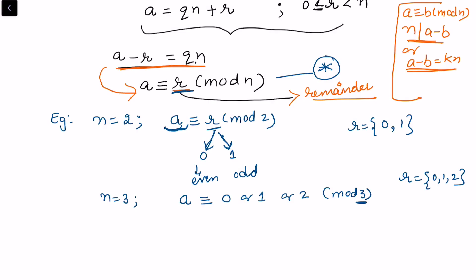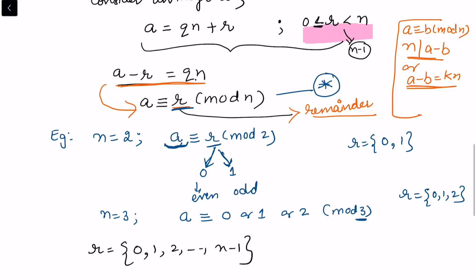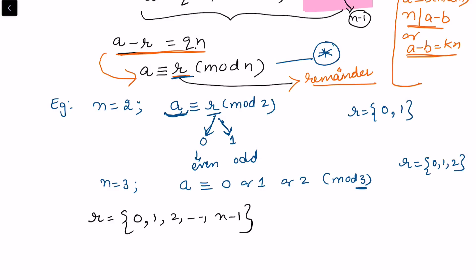This is consistent with the division algorithm, where r satisfies 0 ≤ r < n, meaning the last value r can take is n minus 1. In the congruence expression, the remainder likewise takes values 0, 1, 2, up to n minus 1. This is exactly why the theory of congruences is called the arithmetic of remainders.